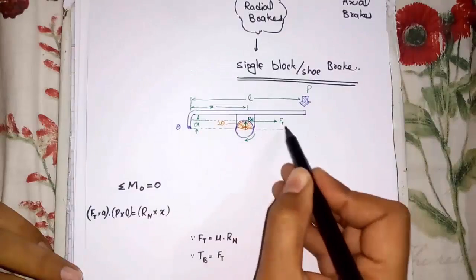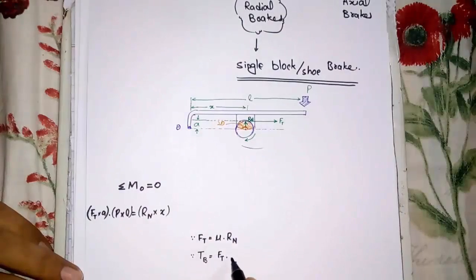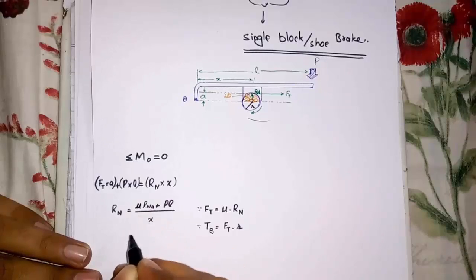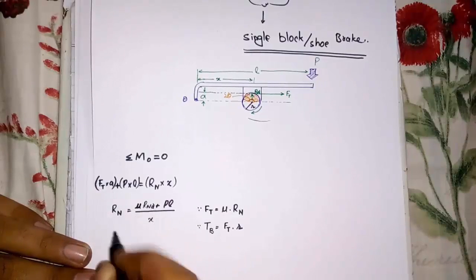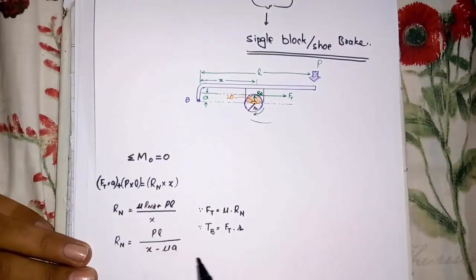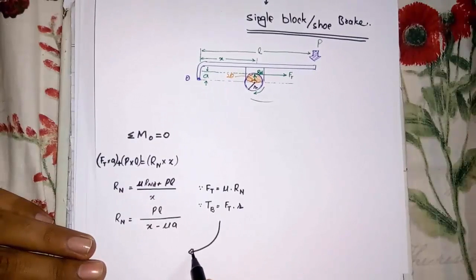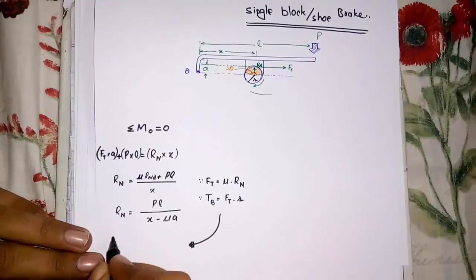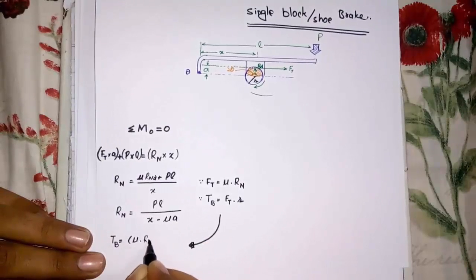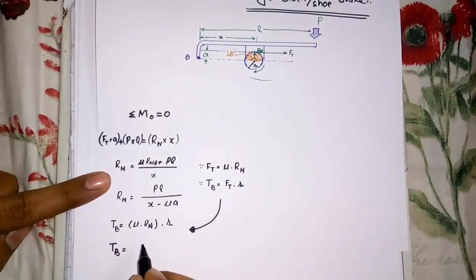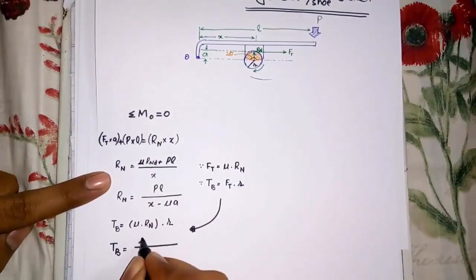Braking torque TB is equal to FT into R, the radius of the wheel. By substituting FT equal to mu times Rn into the equation and simplifying, we get the value of Rn. So by this relation we find TB. This is for the single shoe brake when the wheel is rotating clockwise.